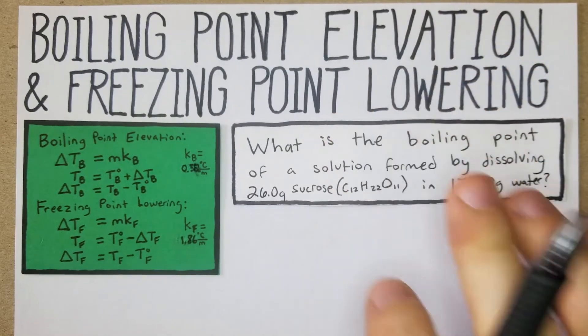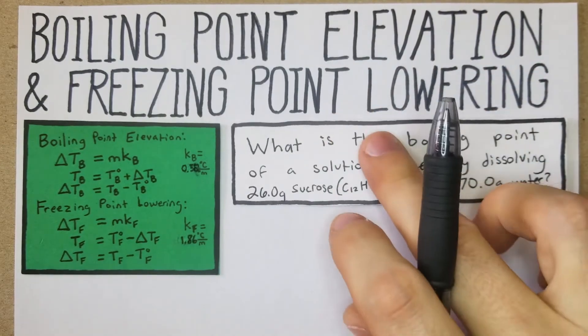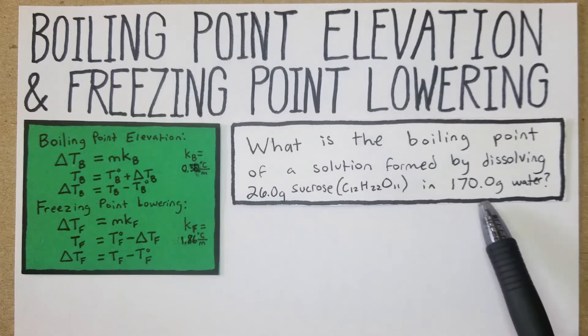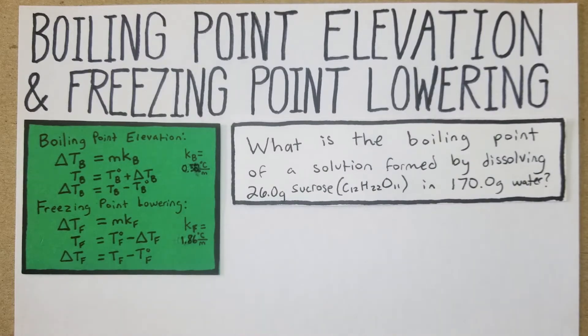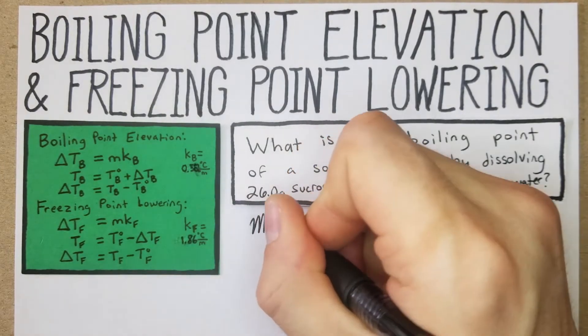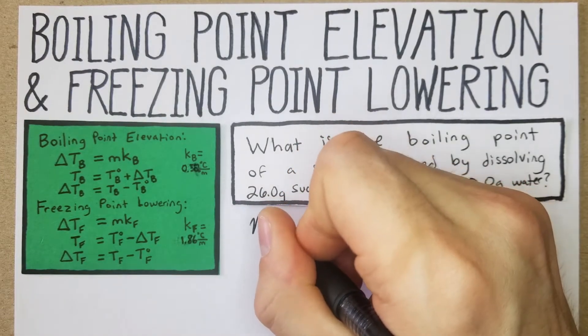Alright, so the first problem: what is the boiling point of a solution formed by dissolving 26 grams of sucrose — table sugar — in 170 grams of water? We're going to start with this formula.